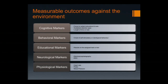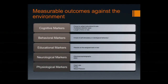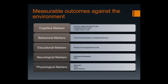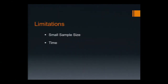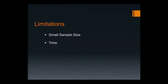In terms of the markers being observed, we are looking at cognitive markers, behavior markers, educational markers, neurological markers, and physiological markers. We will be looking at all these markers in order to come up with a holistic outcome and understanding of how the environment should be tailored.